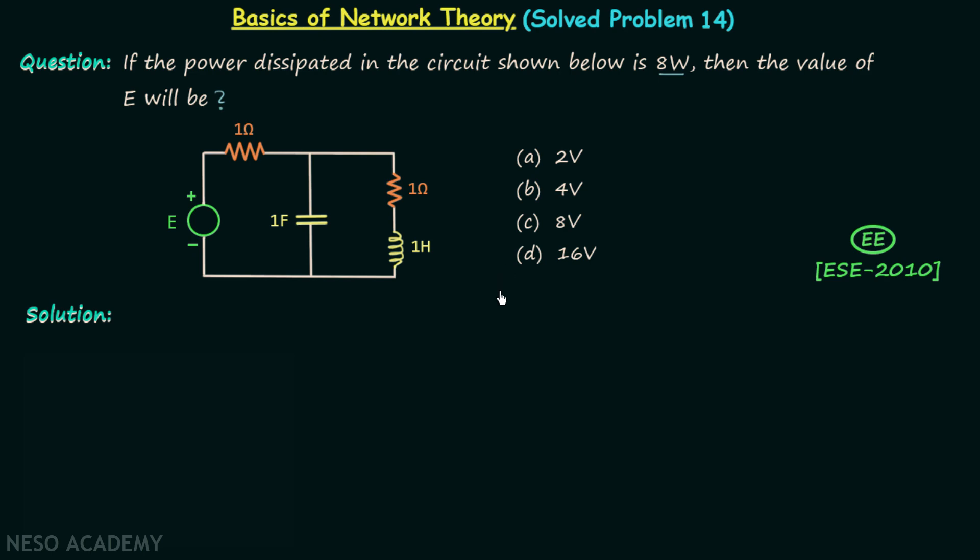There are four options and we need to choose one correct option. When you look at the given network, you will find we have two resistors having the values 1 ohm each.